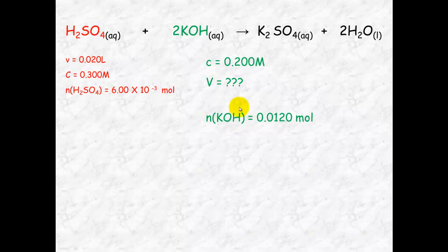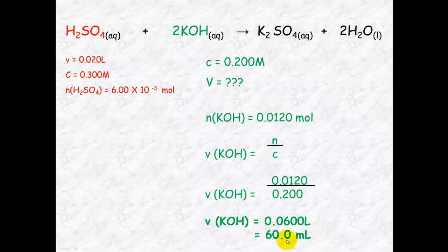Use your number of mole here and you know the concentration. So you can calculate the volume of the potassium hydroxide. Volume equals number of mole divided by concentration, which equals 0.0120 divided by 0.200, which equals 0.06 liters, which you can convert into mils to get 60.0 mil.